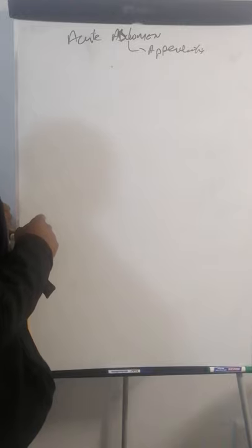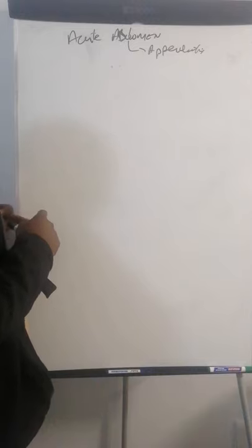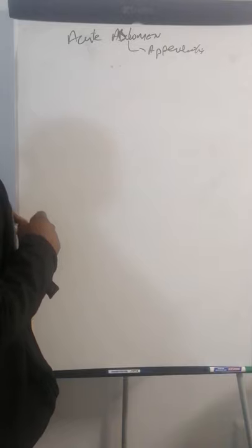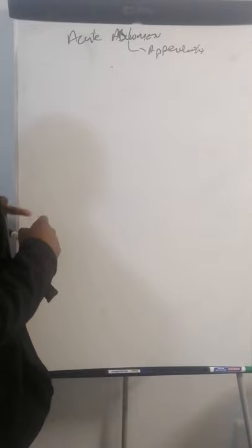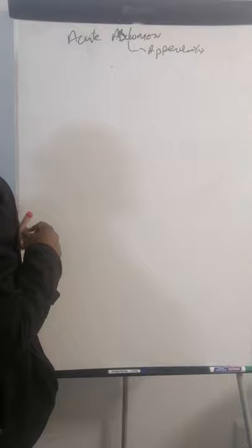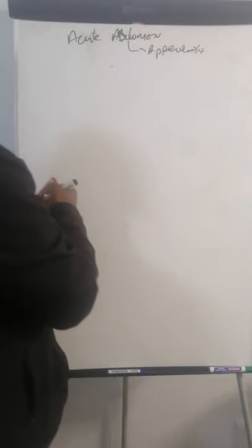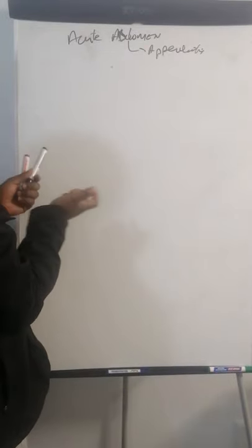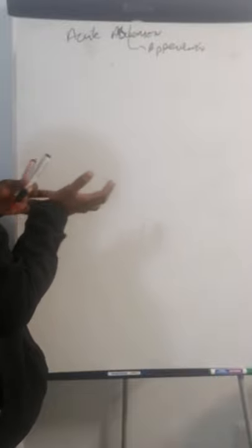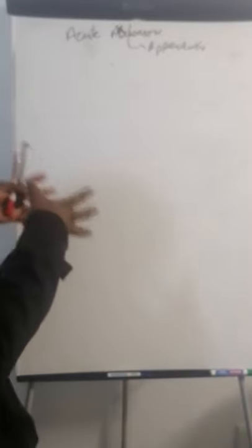So let's define acute abdomen. Acute abdomen by definition is abdominal pain that has been there for less than a week — if it's more than a week, it's no longer acute abdomen. That pain must be one the patient has never presented with before, and it must not have been investigated or treated before. Essentially, it's a sudden, severe pain needing emergency or urgent attention.